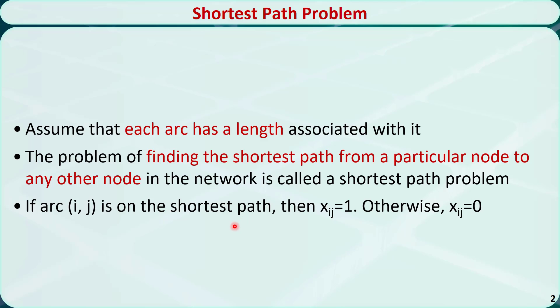If an arc is on the shortest path, we can denote it with x equal to 1. Otherwise, x is equal to 0.